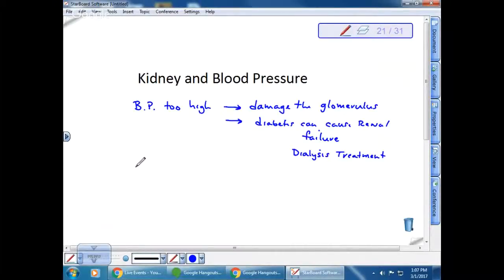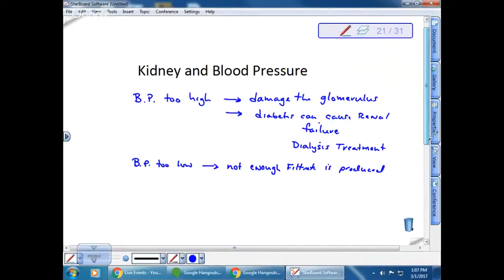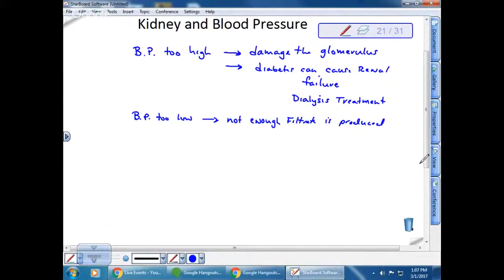If the BP is too low, if your blood pressure is too low, this means that not enough filtrate is produced. This means that you cannot effectively cleanse the blood, you can't effectively get rid of all the nitrogenous waste. This means that the kidney needs to regulate blood pressure.